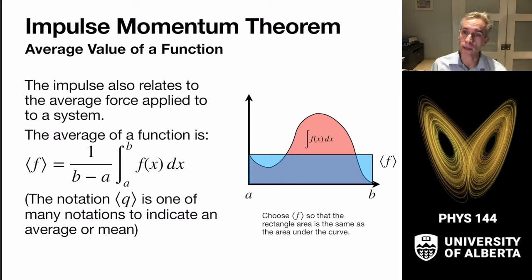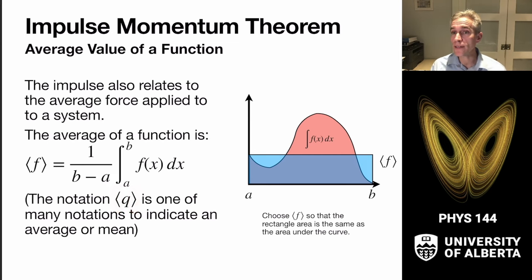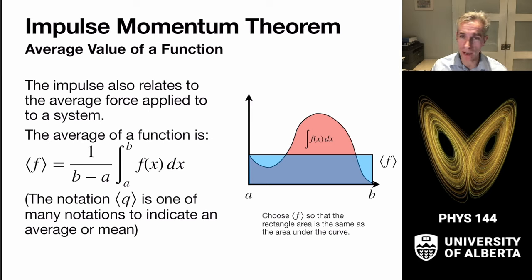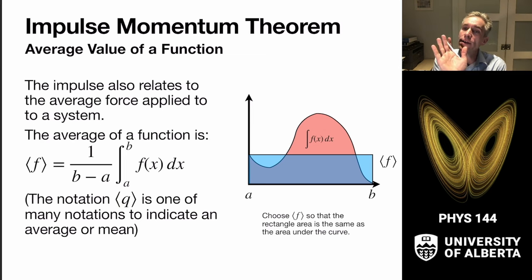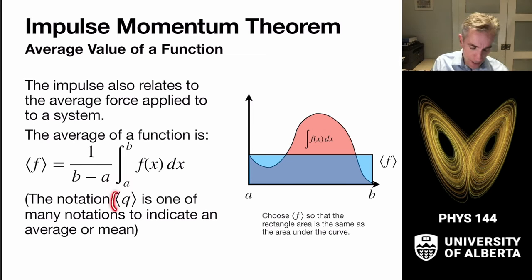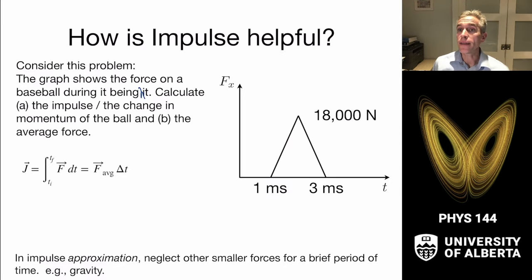These angle brackets — slightly wider than greater-than or less-than signs — indicate the average value of a quantity in physics. So if you see them paired like that, they mean the mean value of something. Let's apply the impulse to a problem showing the graph of force on a baseball while it is being hit.